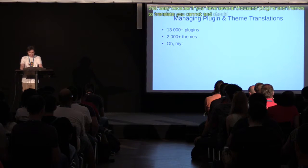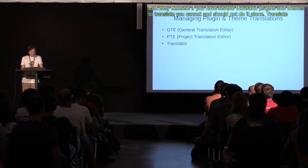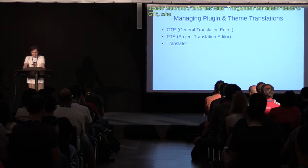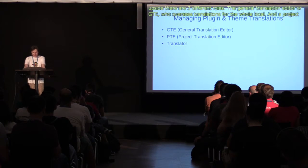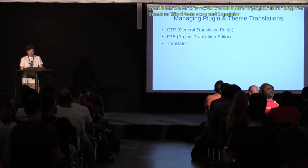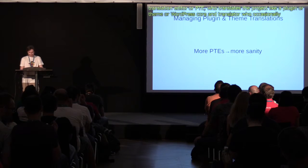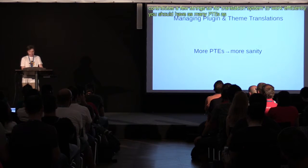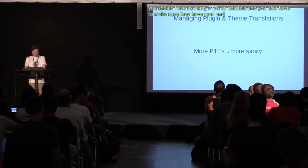It's not that simple, because if you have several thousand plugins and themes to translate, you cannot and should not do it alone. On the Translate.WordPress.org site there are three different roles: the General Translation Editor, or GTE, who oversees translations for the whole locale; the Project Translation Editor, or PTE, who translates a particular project like a plugin, theme, or WordPress core; and a translator, who occasionally contributes a few strings. In order for the translation system to work efficiently, you should have as many PTEs as possible, and make sure they have read and understood the style guidelines for your language.